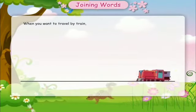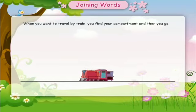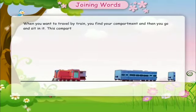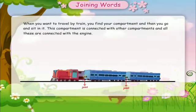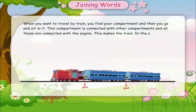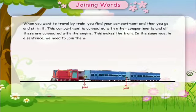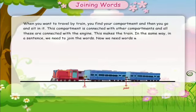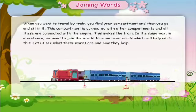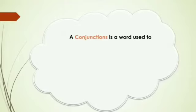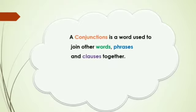Children, when you want to travel by a train, you find your compartment and then you go and sit in it. This compartment is connected with other compartments, and all these are connected with the engine — this makes the train. In the same way, in a sentence, we need to join words. A conjunction is a word used to join other words, phrases, and clauses together. That is why a conjunction is also known as a joining word.